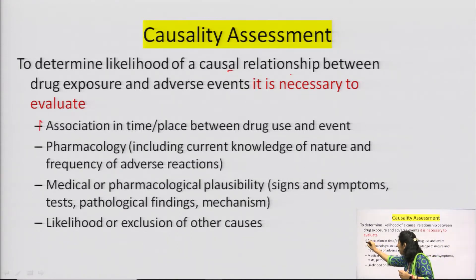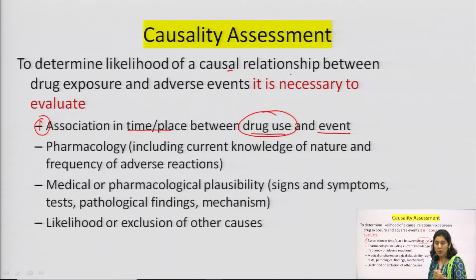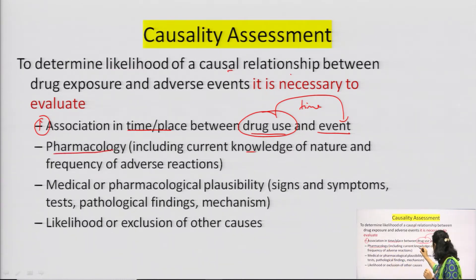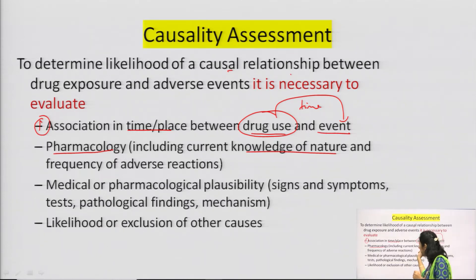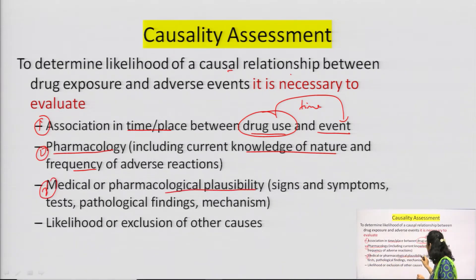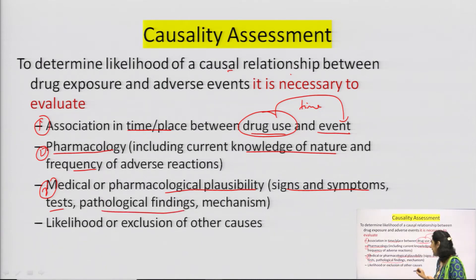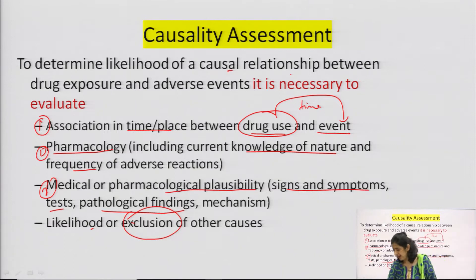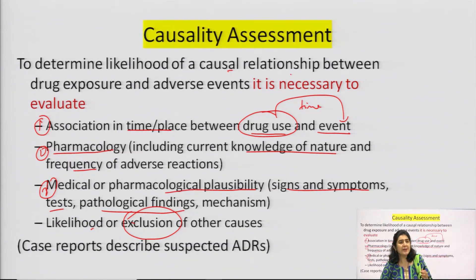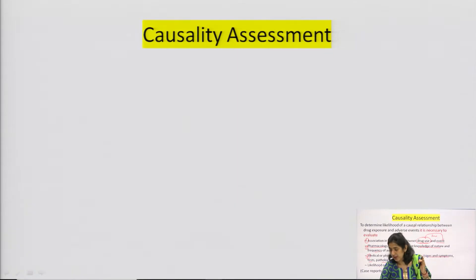To determine the likelihood of a causal relationship between drug exposure and an adverse event, we evaluate: first, time association — when the drug was taken and how long after the event occurred; second, pharmacology of the drug — for example, if it is a sulfa type drug, it can produce allergy; third, medical or pharmacological possibility — what signs and symptoms are present, what tests were performed, what pathological findings and mechanisms exist; and whether other possible causes can be excluded.